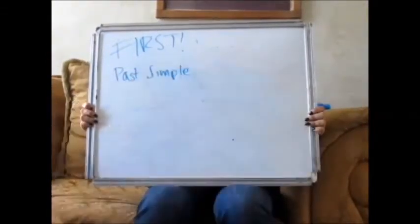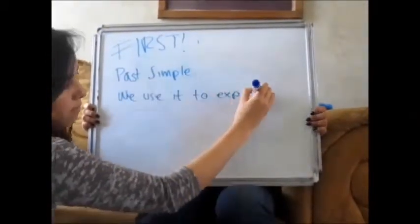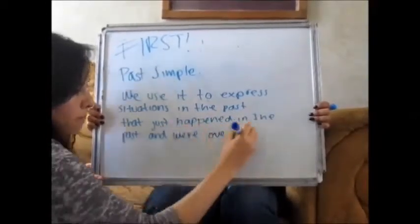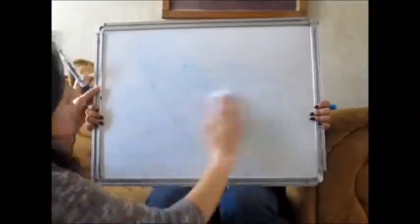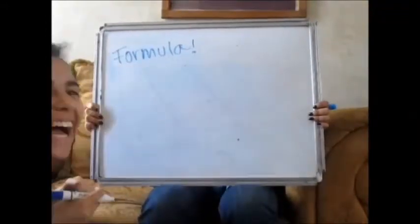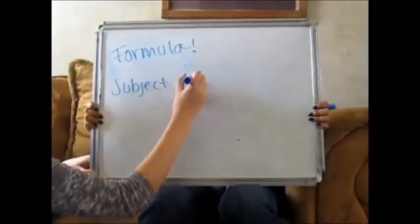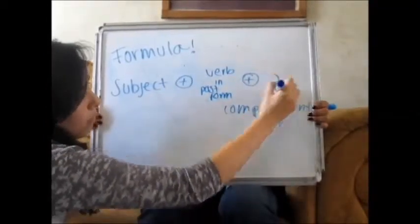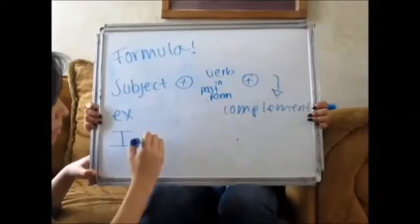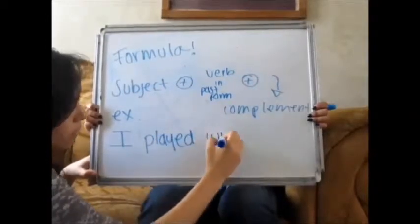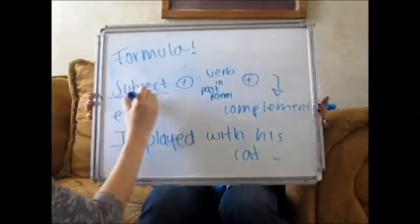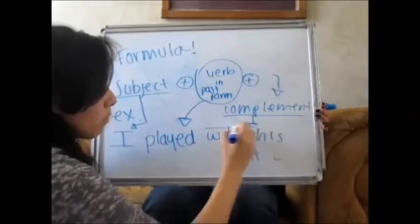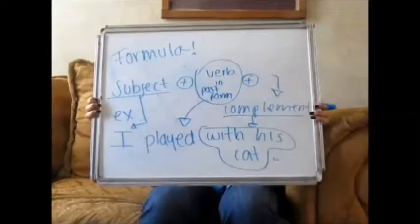First, past simple. We use it to express situations in the past that just happened and were over in the past. The formula for past simple is: subject plus verb in past form plus complement. For example, I played with his cat. I is the subject, played is the verb in past form, and the complement is with his cat.